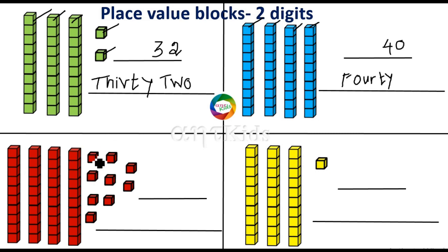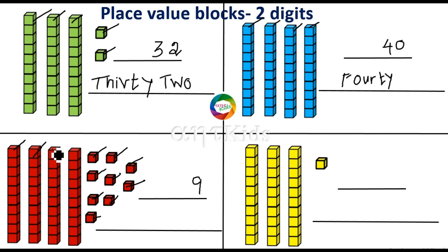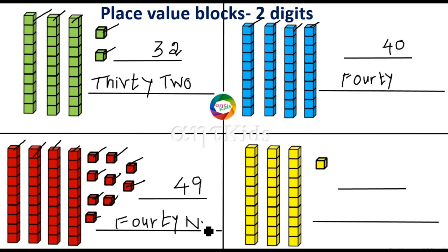And what about here? One, two, three, four, five, six, seven, eight, nine — nine one-blocks are there, so in the ones place you have to write nine. And how many ten-blocks are there? One, two, three, four — four ten-blocks are there, so you have to write four in the tens place. This represents the number 49 — F-O-U-R-T-Y, 40, N-I-N-E — forty-nine.